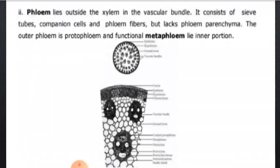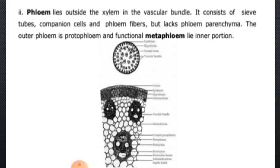The second part is phloem. As far as phloem is concerned, it lies outside the xylem in the vascular bundles. It consists of sieve tubes, companion cells, and phloem fibers.